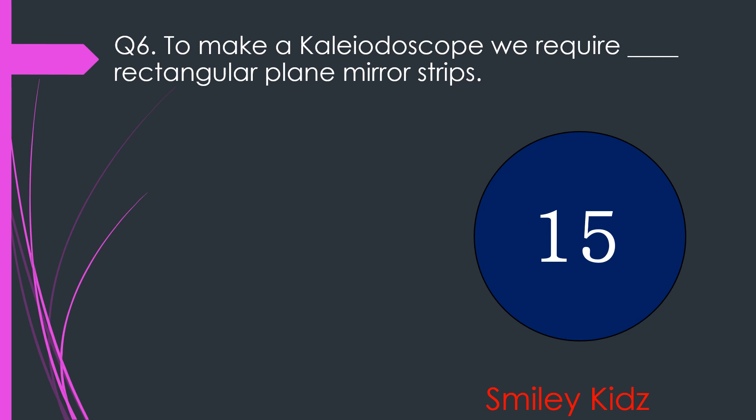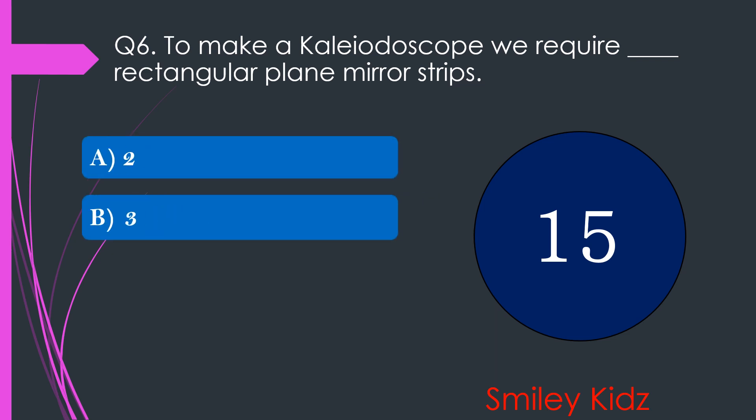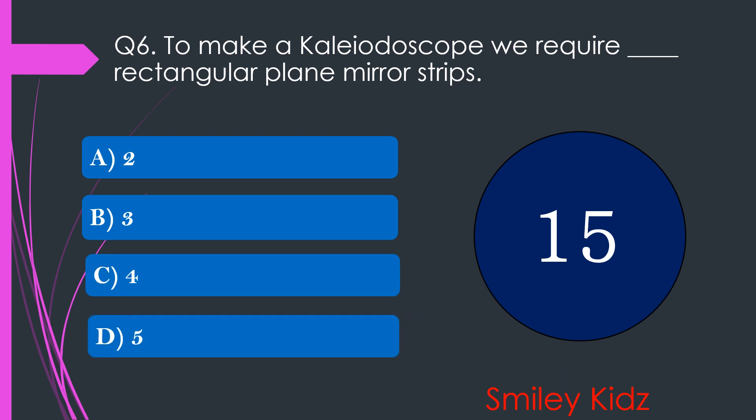Question number 6. To make a kaleidoscope, we require dash rectangular plane mirror strips. The options are A. 2, B. 3, C. 4, or D. 5. Your time starts now.